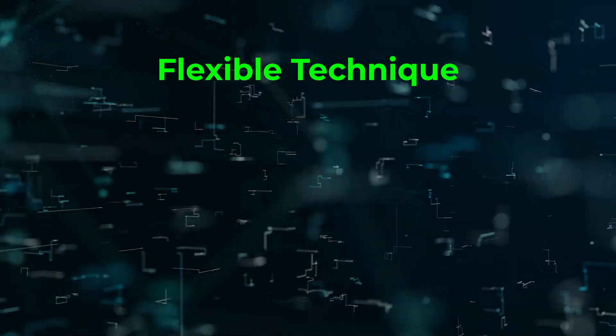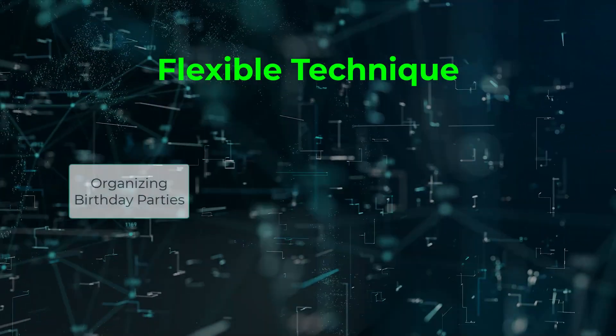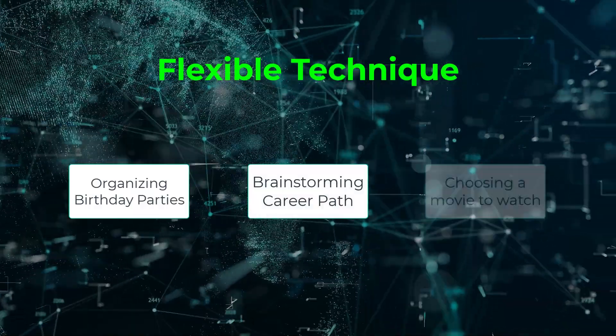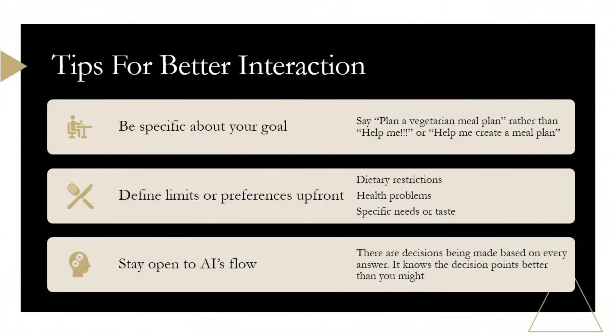You can apply this pattern to almost anything — events, decisions, or even solving everyday problems. To get the best results, follow these tips. Be specific about your goal. For instance, say 'plan a vegetarian meal plan' rather than just 'help me.' Define limits or preferences — if you have dietary restrictions, time limits, or specific needs, you can share them upfront. And stay open to the AI's flow — let it ask the questions; it knows what to ask better than you might.